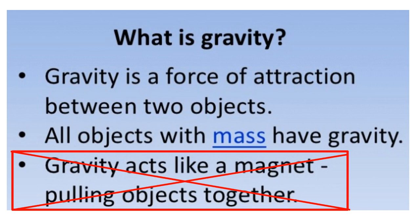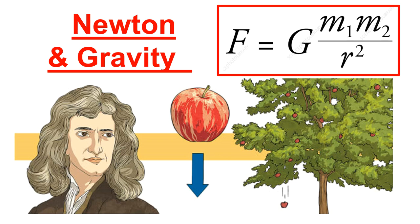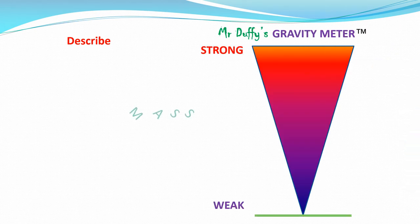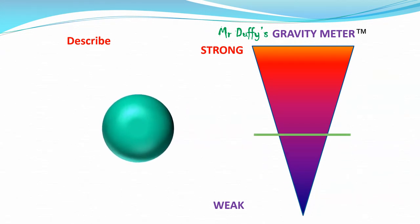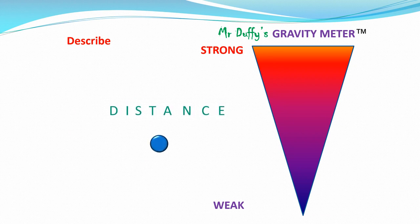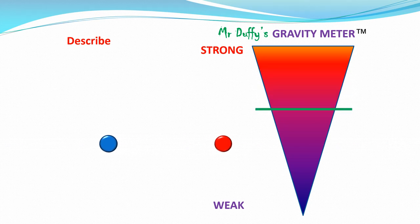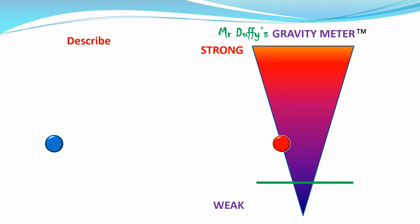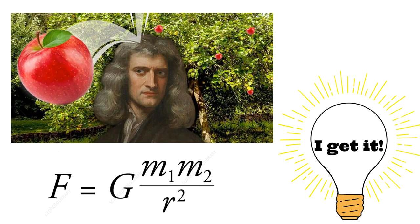Gravity is the force of attraction between two objects with mass — do not say it acts like a magnet. Newton famously saw an apple fall from a tree and developed his theory of gravity based on two things: mass — the more massive an object, the stronger its gravity — and distance — the closer two objects, the stronger the force.